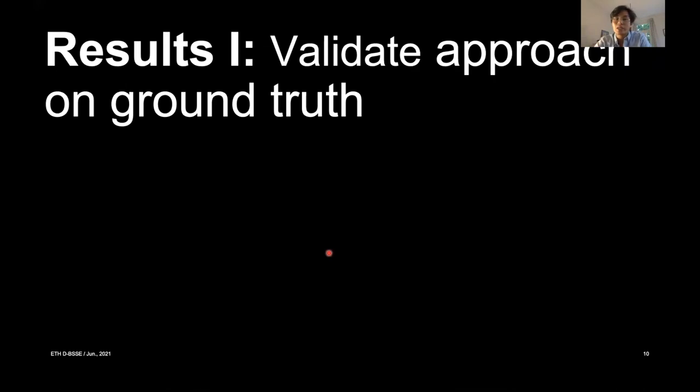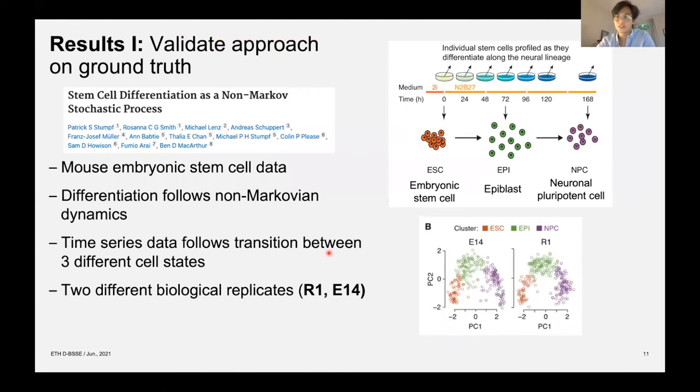So now we have a working framework and we want to see if the approach actually works using a ground truth experimental data set. We found a suitable data set generated by Patrick Stumpf and colleagues who very kindly provided us with the data. It consists of mouse embryonic stem cell data which are known to follow a non-Markovian dynamic. In the figure on the right you see it's a time series data that follows a transition between three different cell types. The linear system I've been showing you before. So we go from embryonic stem cells to epiblast to neuronal pluripotent stem cell.